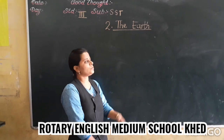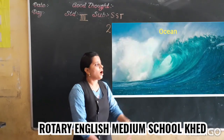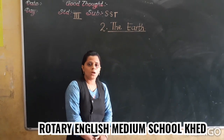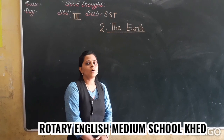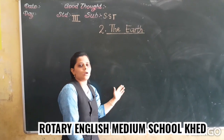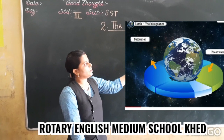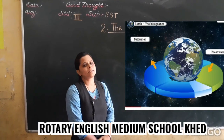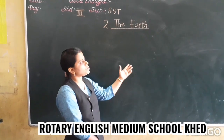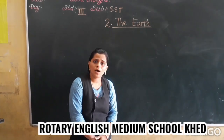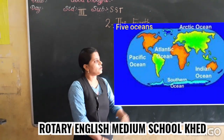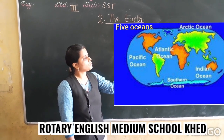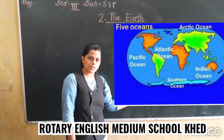Now we will talk about the ocean. What is an ocean? Large bodies of saline water are known as oceans. As you all know, our Earth is covered with water — three-fourths of the Earth is covered with water. That's why our Earth is also known as the blue planet. Now there are five types of oceans: Pacific Ocean, Indian Ocean, Arctic Ocean, Atlantic Ocean, and Southern Ocean.